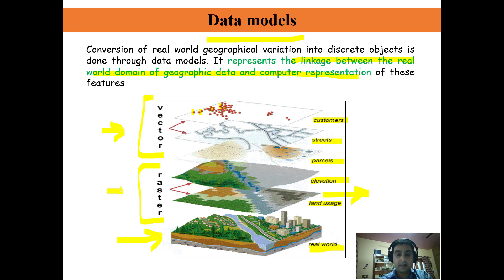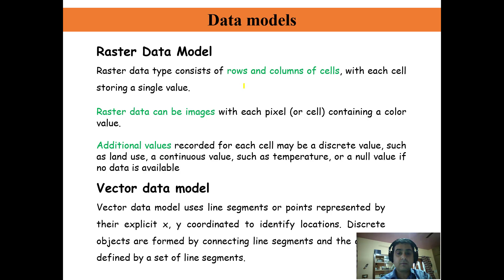To understand it in a better way, raster data consists of rows and columns of cells, with each cell storing a single value. Additional values recorded for each cell may be discrete values such as land use, continuous values such as temperature, or other such variables.